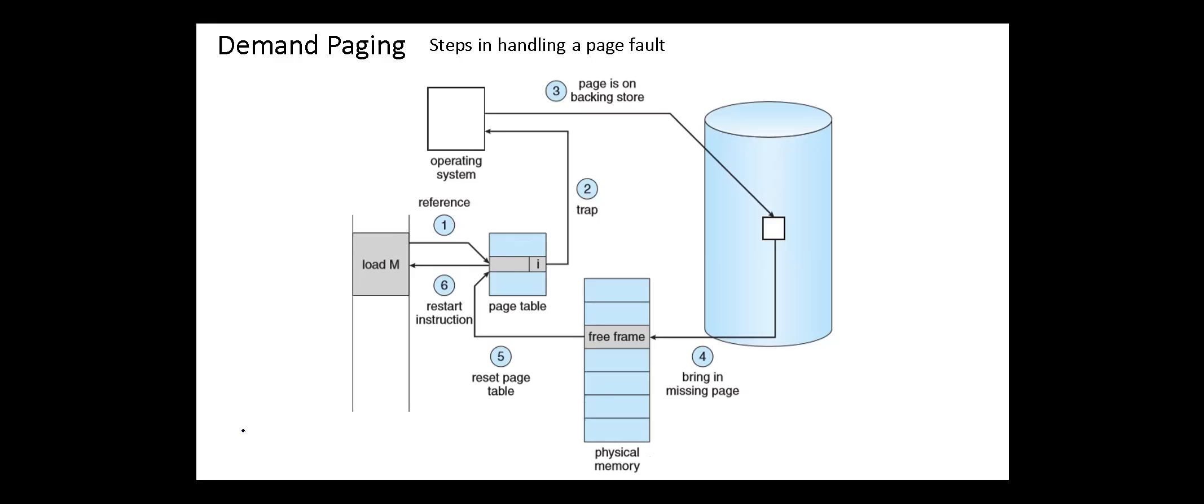If the referenced page is not in memory, the valid-invalid bit is invalid. Then a trap to the operating system occurs. The operating system determines the type of the trap—in this case, page fault. It saves the process state, looks for a free frame, and requests a read operation to the backing store. The required page is then swapped in into this free frame, and the page table entries are corrected. Here we store the frame number and the valid-invalid bit is updated to valid.